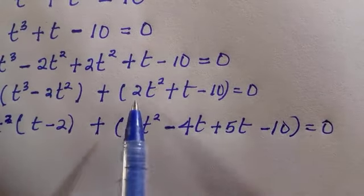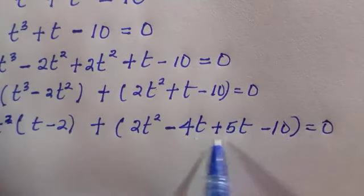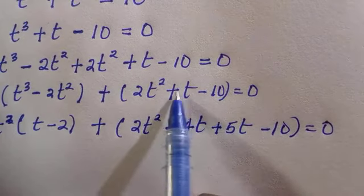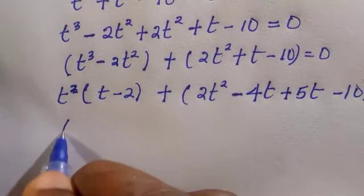So what I did here is if you multiply the coefficient of t squared by 10, that is 20, right? So the two values are minus 4 and the 5, because minus 4 plus 5 is 1 and minus 4 times 5 is 20.